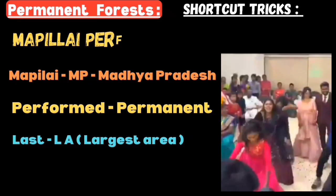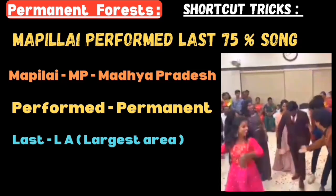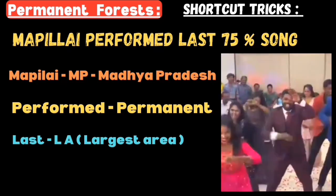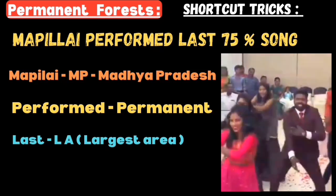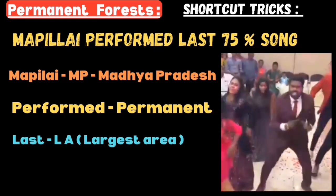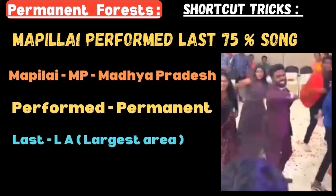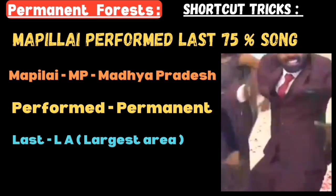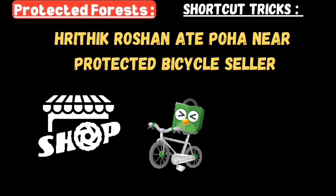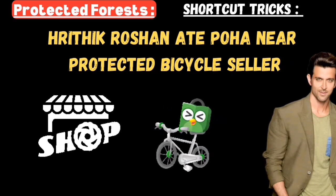Unclassed forest belongs to government, private, and communities. Permanent forest - the shortcut is 'Mapillai performed last 75% of song.' Mapillai means groom. 'MP' refers to Madhya Pradesh, 'performed' - 'PR' refers to Permanent, 'last' - 'LA' refers to Largest area. Madhya Pradesh covers 75% of the largest area under permanent forests.